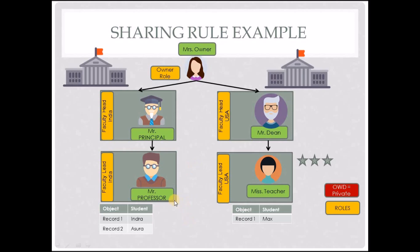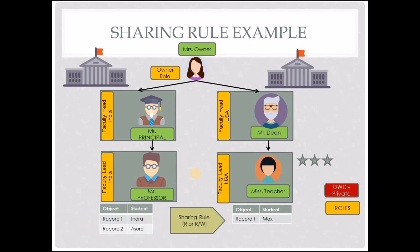While there is vertical access, Mr. Professor and Ms. Teacher can't see each other's records because they are not placed in the hierarchy to enable that kind of sharing. But what if all records belonging to Mr. Professor from the faculty lead India role need to be shared with users in the faculty lead USA role? This isn't possible using role hierarchy. To enable this type of lateral sharing, we introduce the sharing rule, which will provide read or read write access so that Ms. Teacher can now see Record 1 and Record 2 which belong to Mr. Professor.